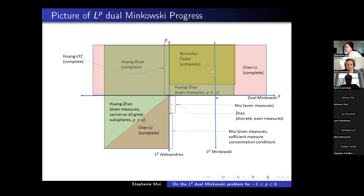When Q equals N, we get the LP Minkowski problem. One thing everyone will probably notice is that there hasn't been much progress made in the fourth quadrant—P < 0 and Q > 0. This is the most challenging quadrant, and the results I will present today are located there.